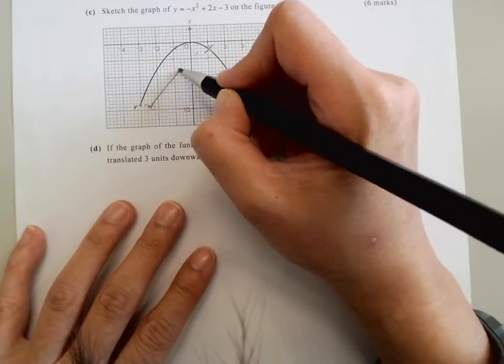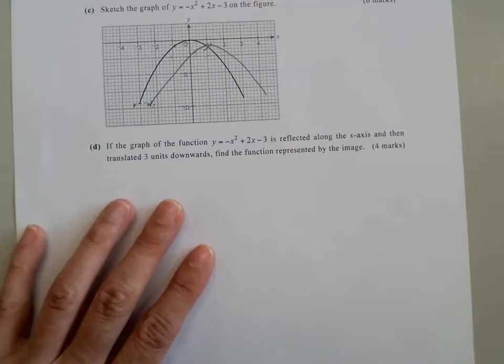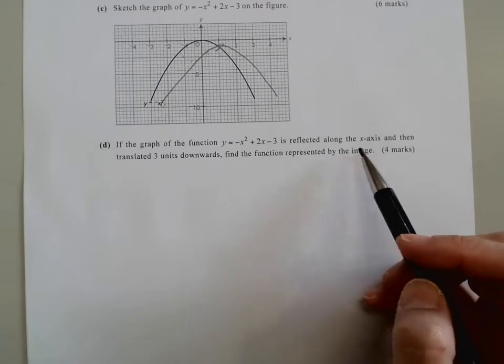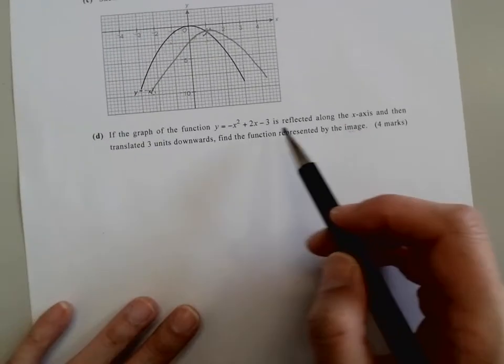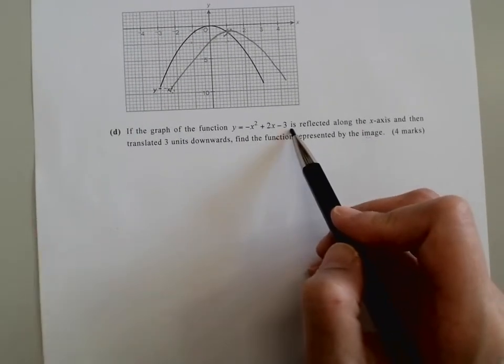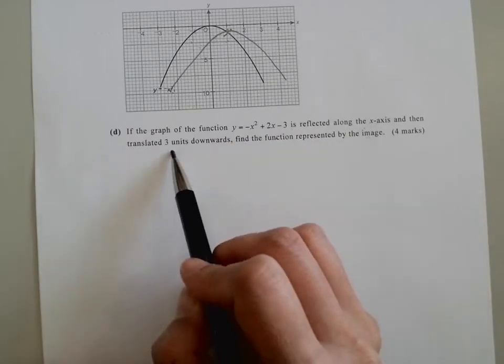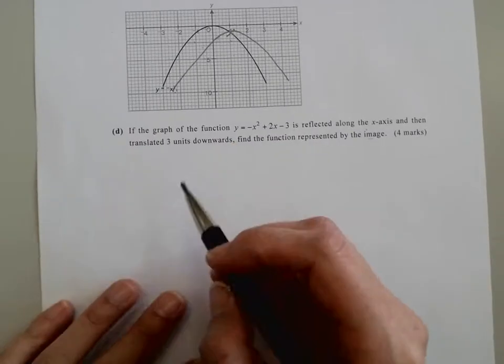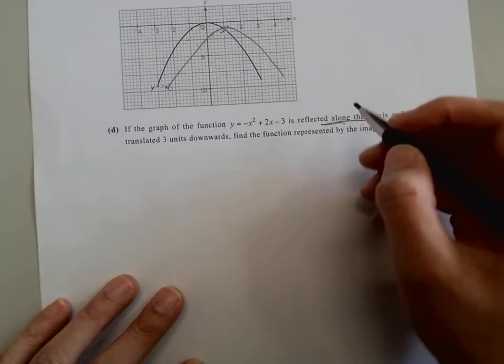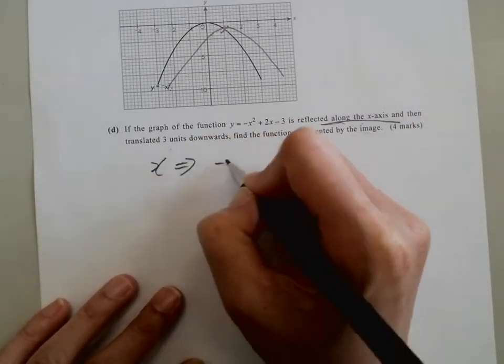Now this is reflected along the x-axis and translated. So we now reflect along the x-axis and then translate three units downwards. So what we're going to do is reflect along the x-axis, so all the x become negative x.